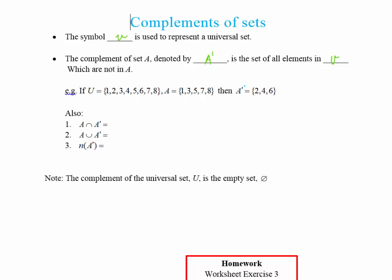then the complement of A, which is A dash, are the numbers that we would have to put into A to make up my universal set, or the numbers that I left out of A, which in this case are 2, 4, and 6.